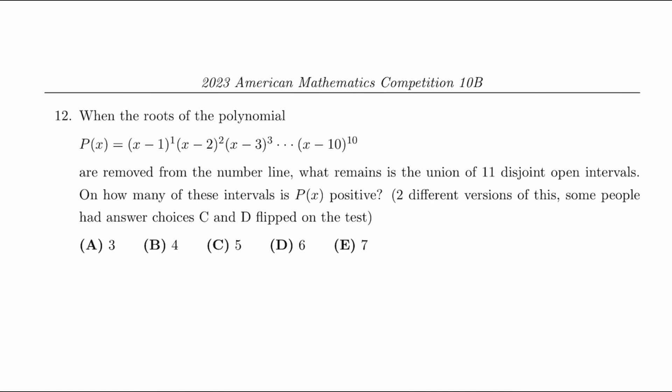This question says when the roots of the polynomial P(x) are removed from the number line, what remains is the union of 11 disjoint open intervals. How many of these intervals is P(x) positive? The last sentence just says there are two different versions